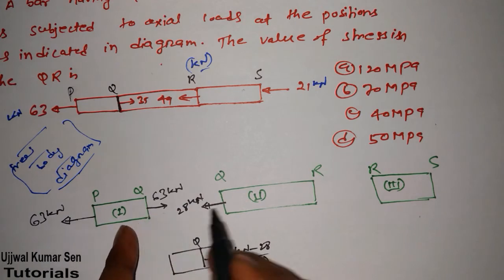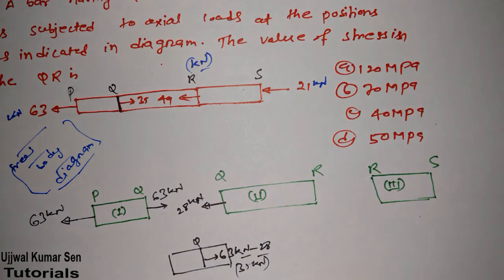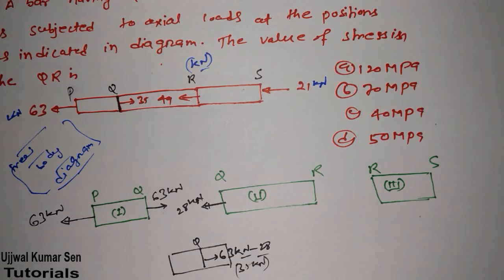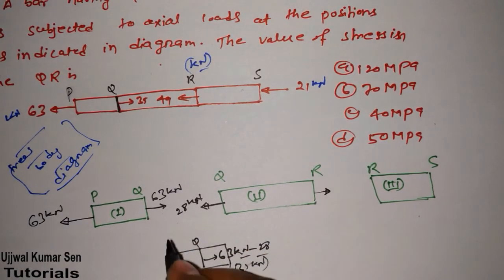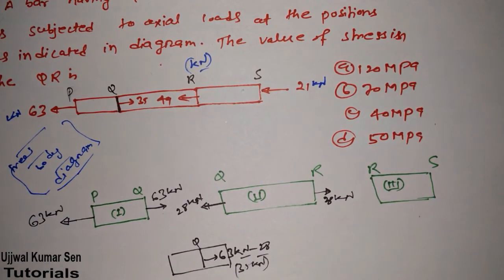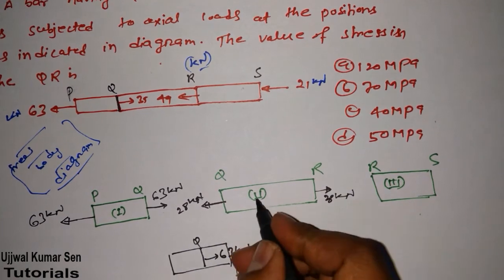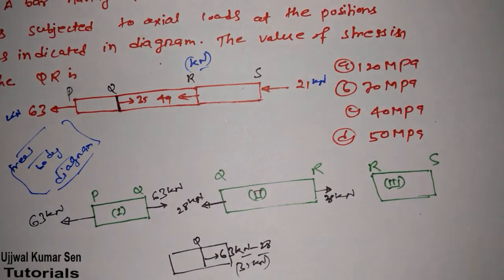That means adding part one and part two gives 35 kilonewtons. Once you understand this concept, free body diagram is nothing — you can easily solve problems. After doing this, if the force acts in one direction, there must be the same load acting in the opposite direction, because of balancing — without this the part cannot be held in equilibrium.